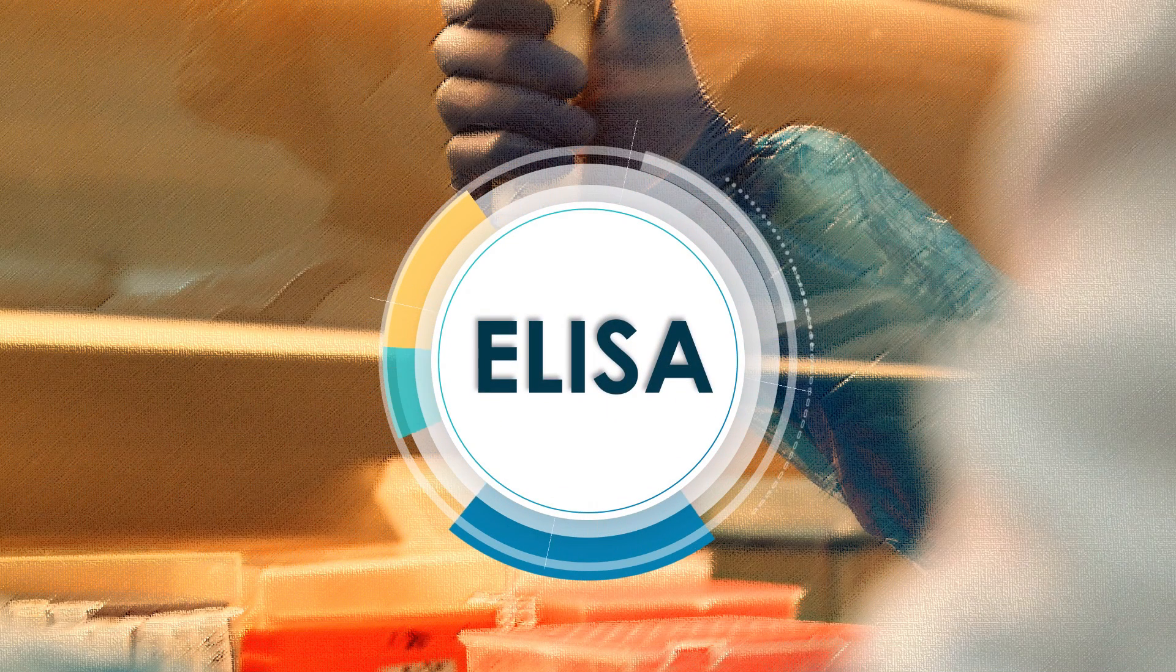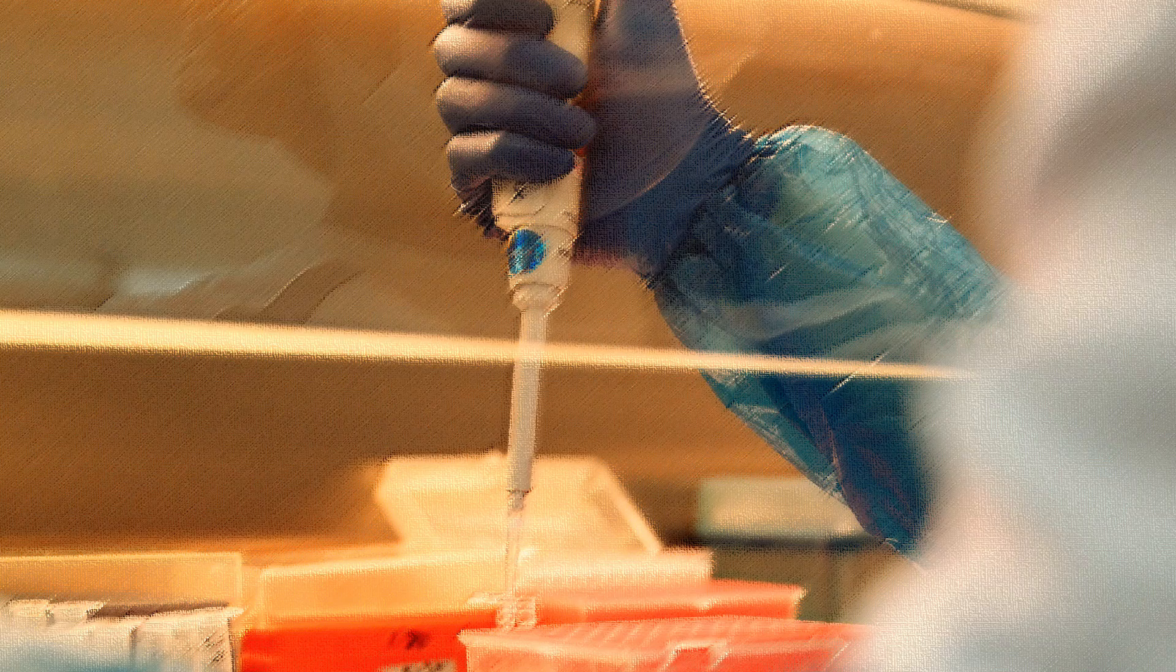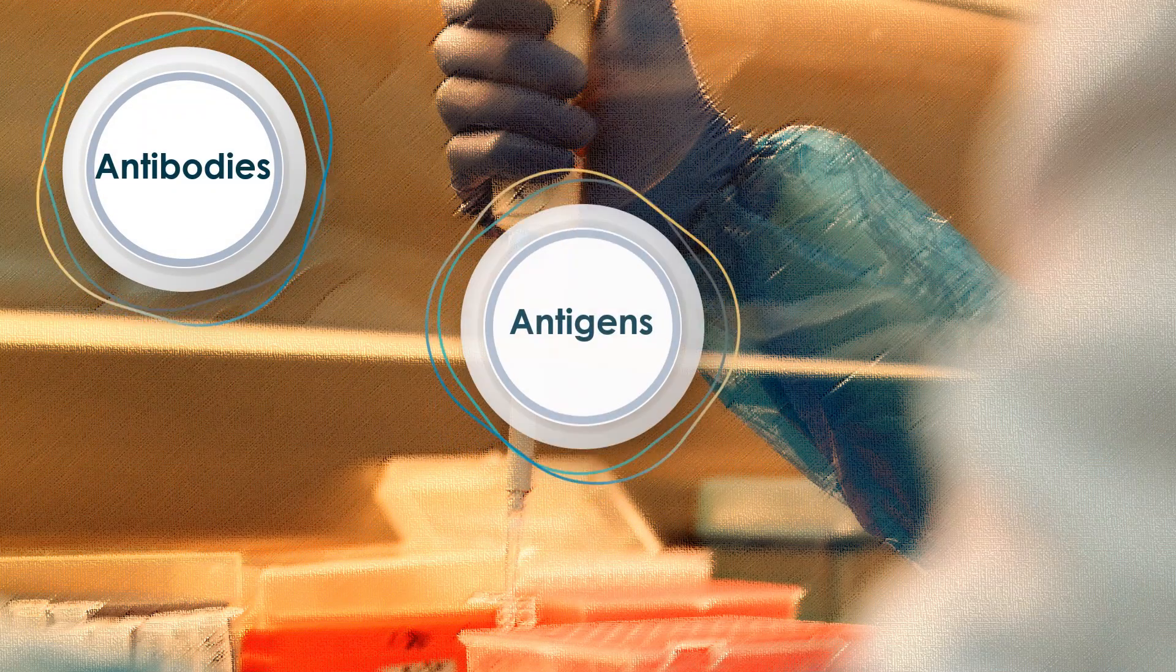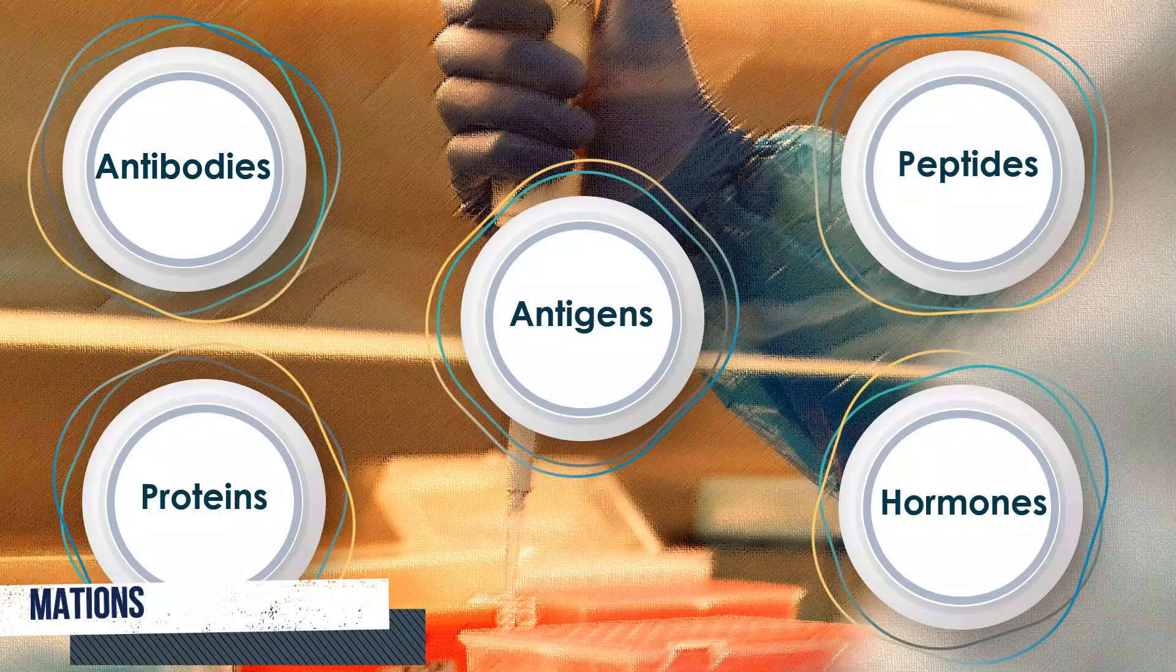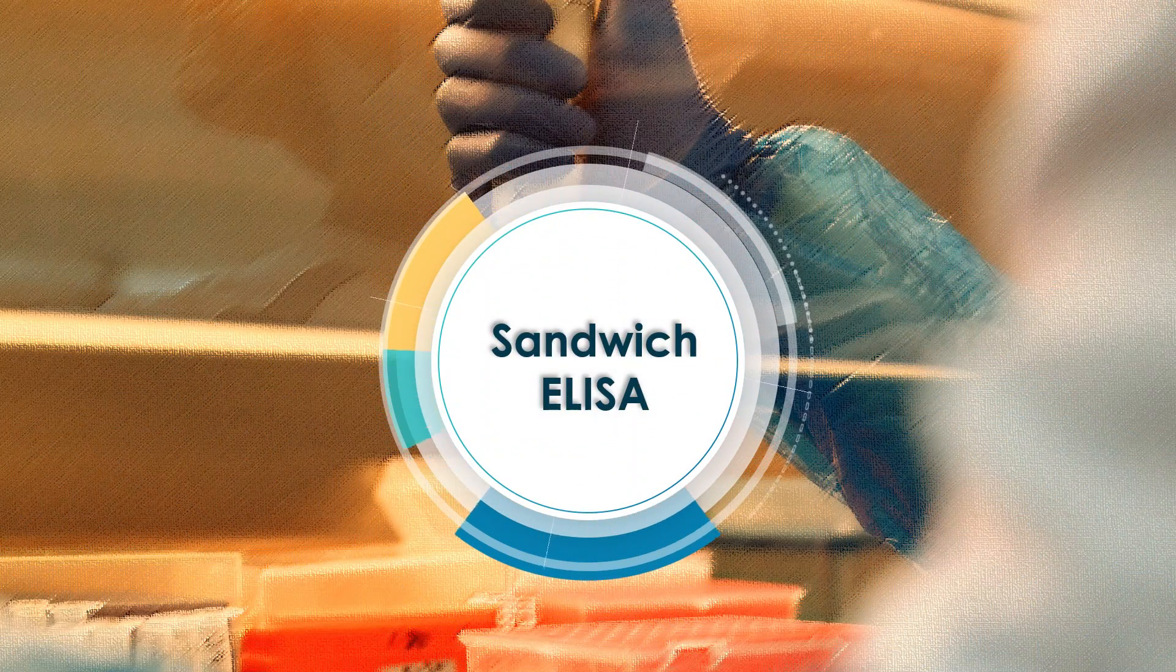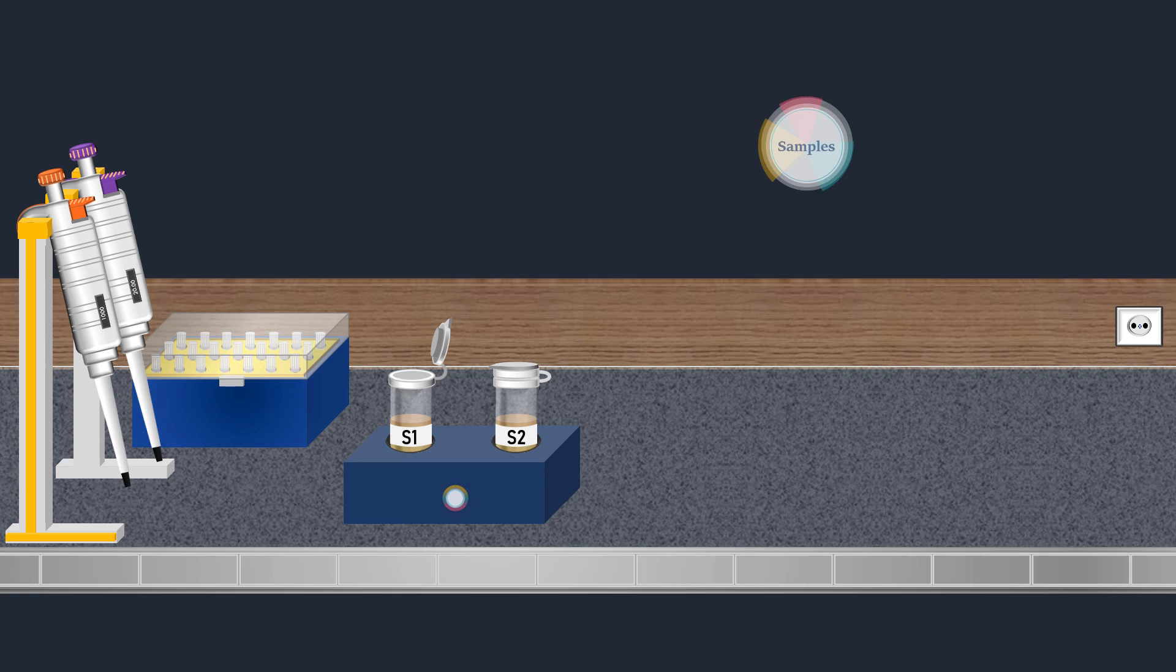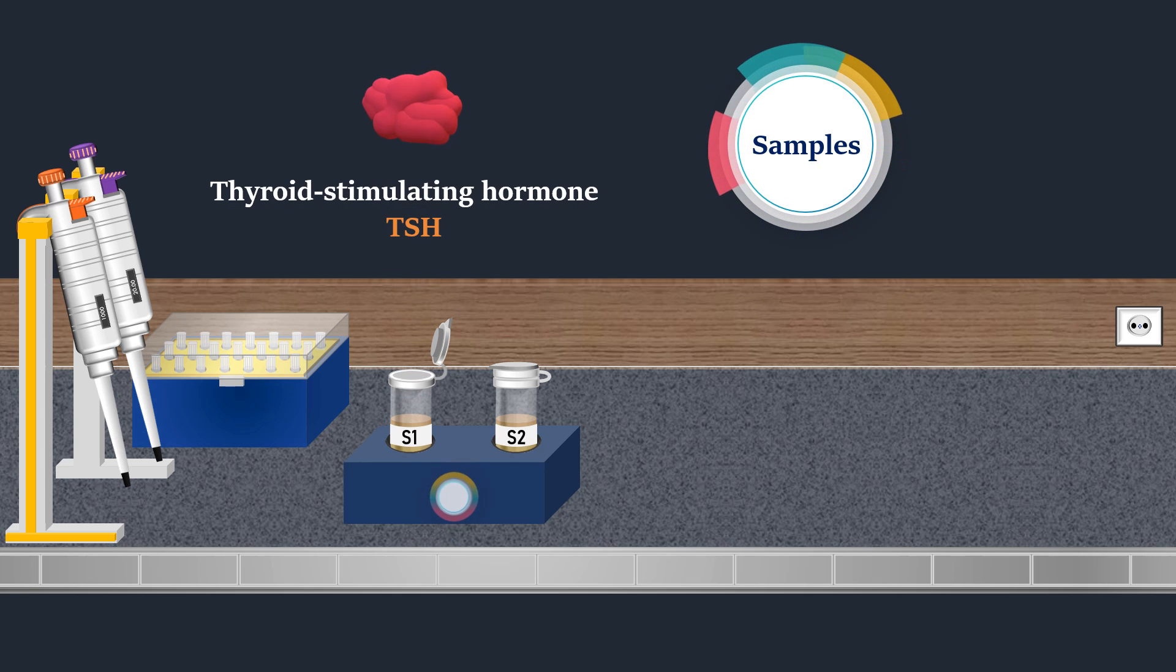ELISA is a plate-based assay technique designed for detecting and quantifying soluble substances such as antibodies, antigens, proteins, peptides, and hormones. ELISA assays are categorized into various types. In this video, we will focus on sandwich ELISA and explore how it can be applied to detect and quantify thyroid-stimulating hormone present in a sample.